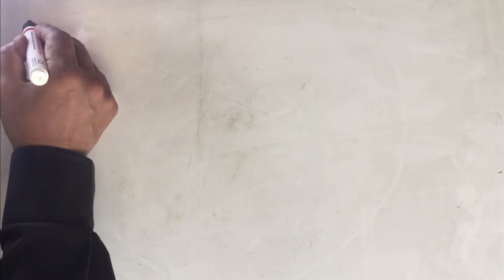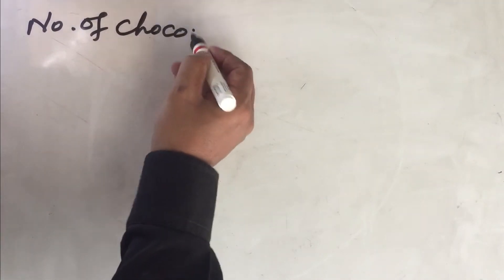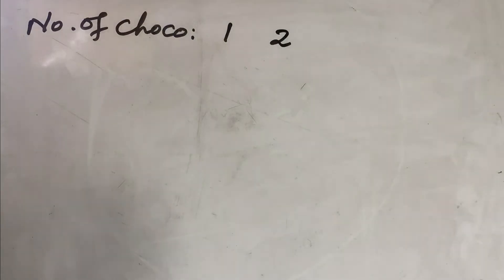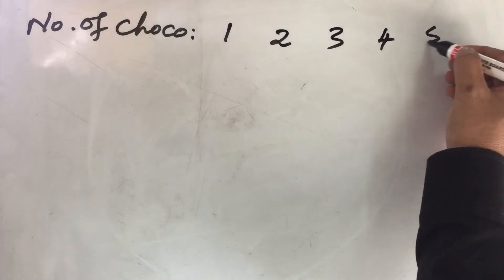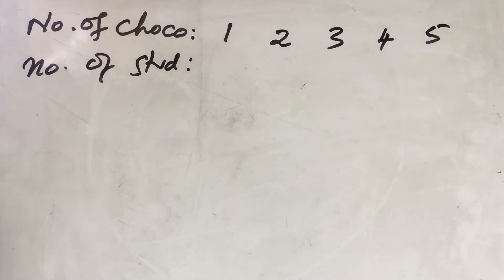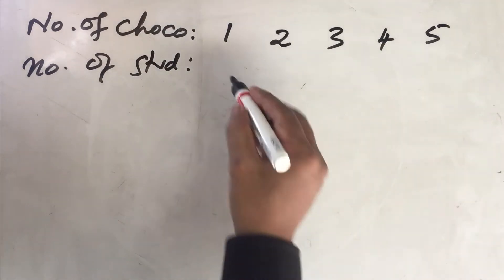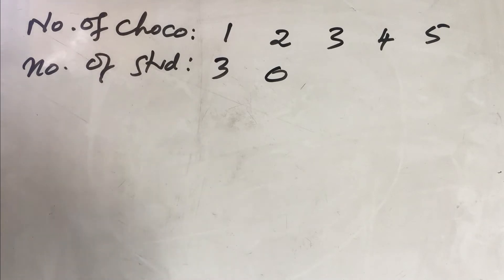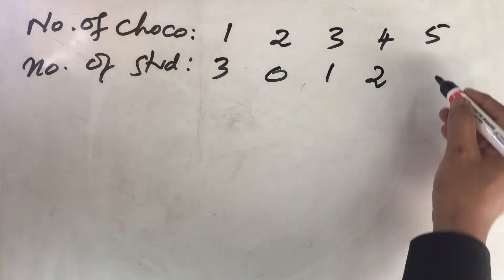Now we ask: how many chocolates did each person collect? Maybe three students collected one chocolate, nobody collected two chocolates, one student collected three chocolates, two students collected four chocolates, and maybe four students collected five chocolates.